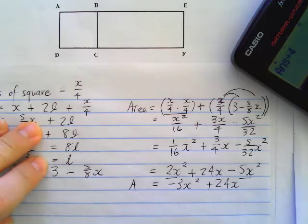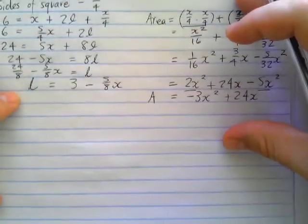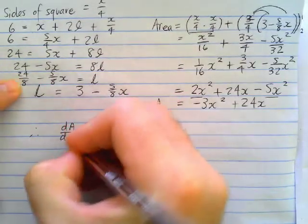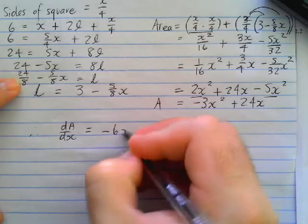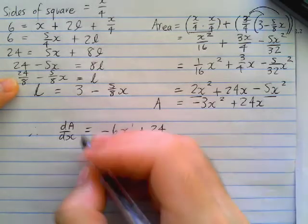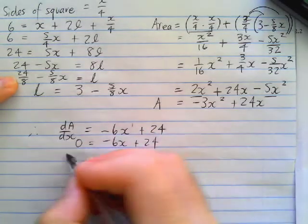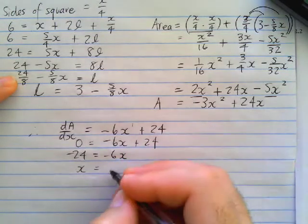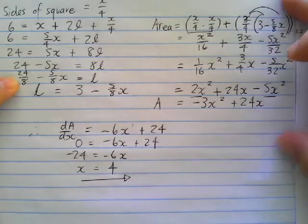In order to work out the maximum area, we're going to have to find the first derivative. We're just going to carry on working here. And the first derivative, we're going to say, therefore, dA over dX is equal to negative 6X to the power 1 now, plus 24. When we work out our maximum, we're going to make the first derivative equal to 0, negative 6X plus 24, and solve for X. So negative 24 is equal to negative 6X, and then we're going to divide by the negative 6 to make X equal to 4. So there's our answer ultimately in the end, the value of X is 4.